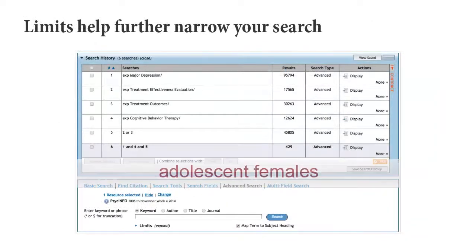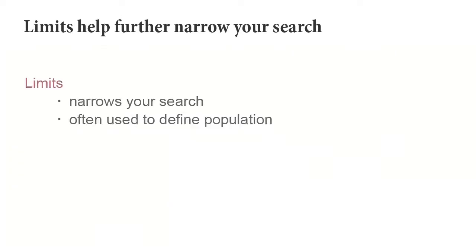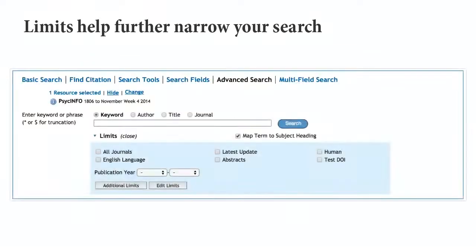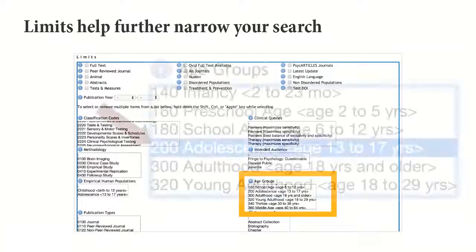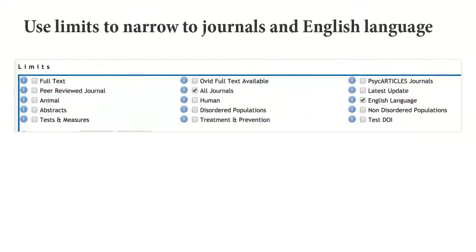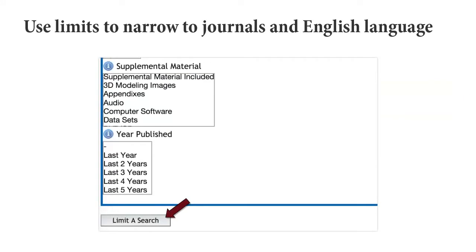What is missing from this search is the term adolescent females. To enter this component of the search, we want to use the limits feature. In PsychInfo, we often need to use limits to define our population. We can retrieve those by selecting limits, which is below the search box. Once we have accessed the limits, we want to select additional limits. Let's choose adolescents from the age groups column and female from the population groups column. Finally, we can limit the search to all journals and to English language. Apply the limits by selecting the Limit a Search button.